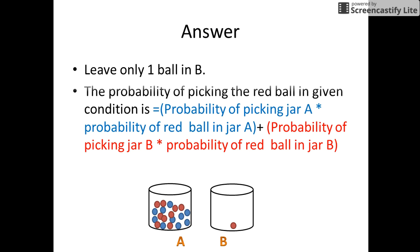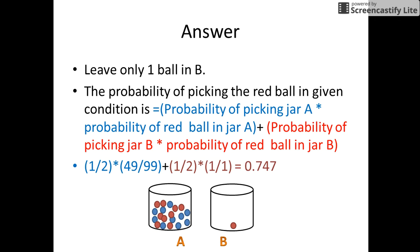The answer to this puzzle is we should leave only one red ball in jar B. The probability of picking the red ball in any given condition is the probability to select a jar multiplied by the probability to select the red balls from the selected jar. The probability to select jar A is 1 by 2, multiplied by the probability of selecting red balls from jar A which is 49 by 99, since we transferred all 49 red balls from jar B to jar A. Jar A now has a total of 99 balls, which includes 49 red balls and 50 blue balls.